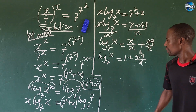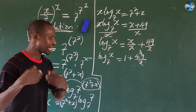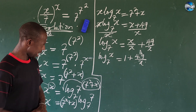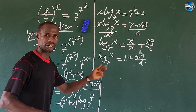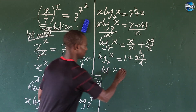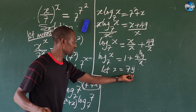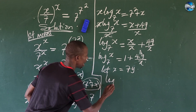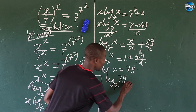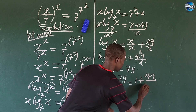So what do we do here? We need to make some substitution. Let's use something to represent our x based on the base number we have. So from here, let x be equal to 7y. So wherever we see x, let's put 7y. So automatically we're going to have our expression become: 7y times log of 7y base 7, equal to 1 plus 49 all over 7y.